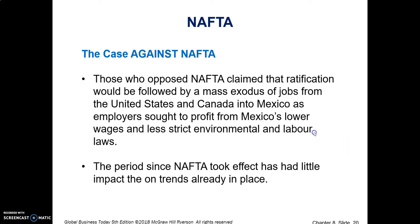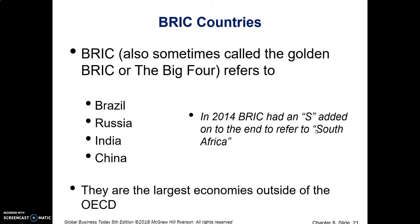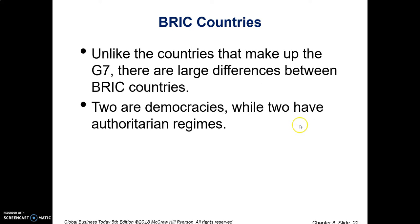Let's go into some other regional economic areas — the BRIC countries: Brazil, Russia, India, and China. In 2014, South Africa was added, making it BRICs, though generally the big four were the focus. These are the largest economies outside of the Organisation for Economic Co-operation and Development. Two of the BRIC countries are democracies and two have authoritarian regimes, yet they still signed an agreement to work together to reduce trade barriers.